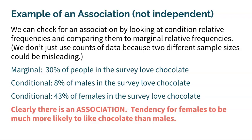We don't just use counts of data because two different sample sizes could be misleading. You can't just look and say, 'There are more boys that like to go to the beach, fewer girls that go to the beach, so clearly boys are more likely to go to the beach.' No, you need to look at percentages because they take into account size relative to the whole.